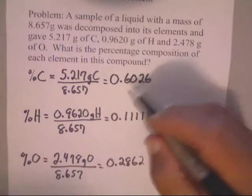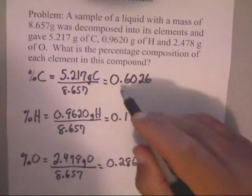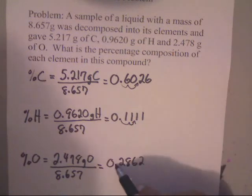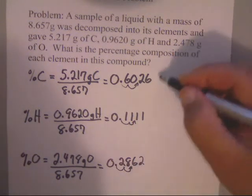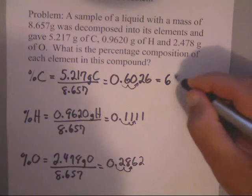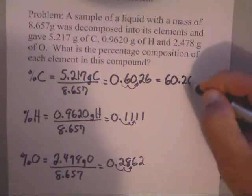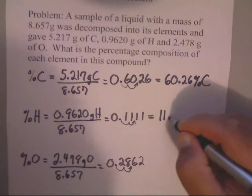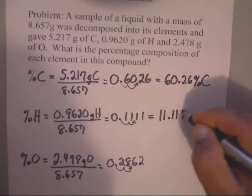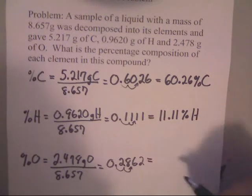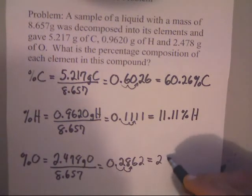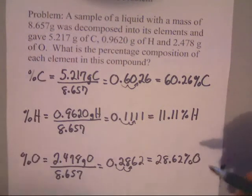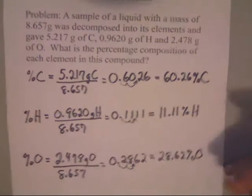Now remember, I've got to swing the decimal on all these twice, because it's a percent. That's one, two swings for each. So basically, I've got 60.26% carbon, 11.11% hydrogen, and 28.62% oxygen.